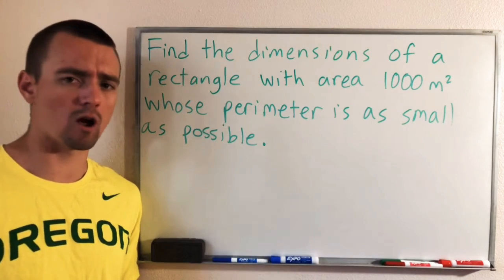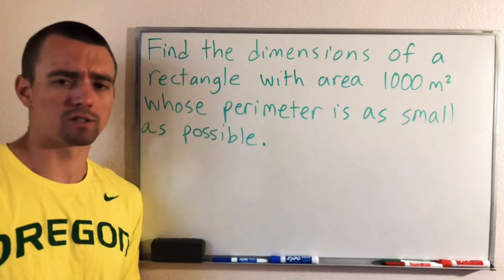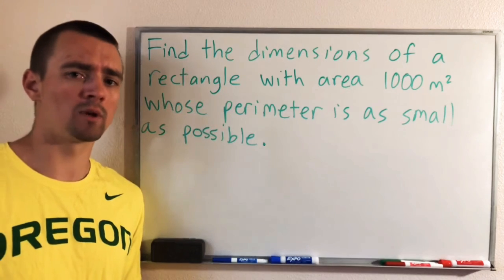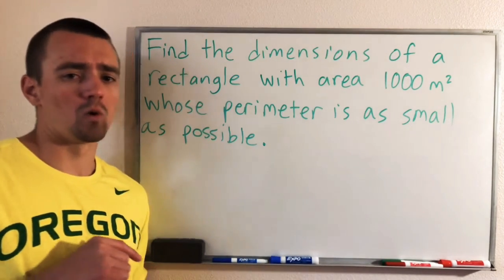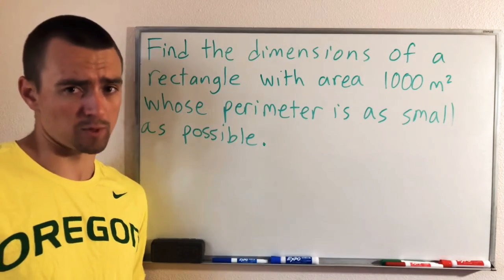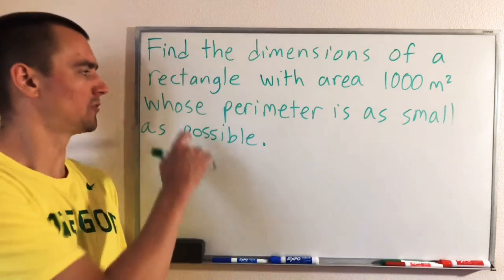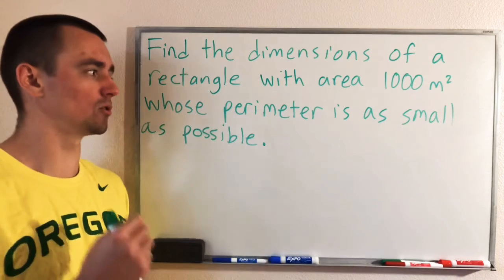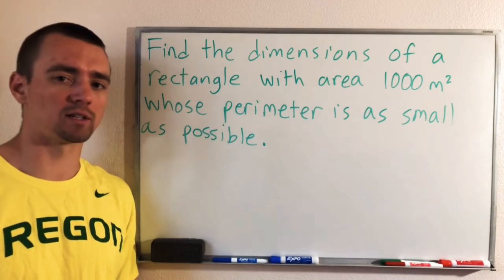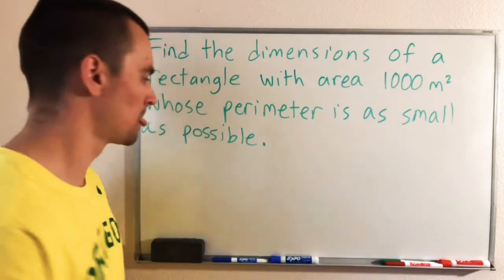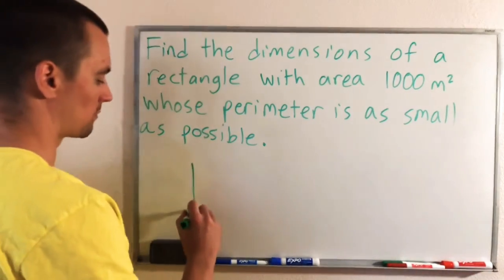So like I did with a lot of the other optimization problems, you kind of want to start by coming up with a couple different equations. First thing you want to think about is what is the thing that you're trying to optimize. So in this case, we're trying to figure out a rectangle whose perimeter is as small as possible. So basically the thing that we're optimizing is the perimeter of the rectangle.